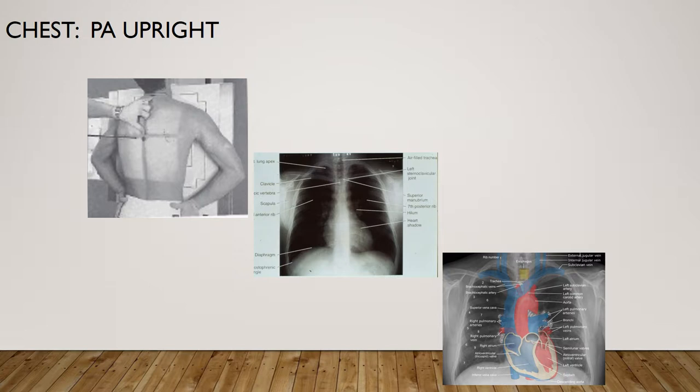For a PA chest x-ray, the patient should be erect, chin raised, hands on hips with palms out, and shoulders rolled forward. The central ray is going to be centered to the lung field on all patient types — sthenic, hypersthenic, or hyposthenic — with accurate collimation on both top and bottom. Center the thorax bilaterally to the image receptor borders with equal margins on both sides, ensuring there is no rotation of the thorax.